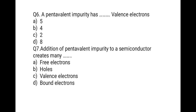The next question: a pentavalent impurity has how many valence electrons? The correct option is 5. Penta means it has 5 valence electrons in its outermost orbit.